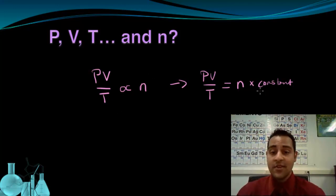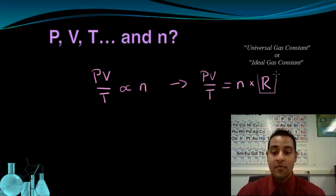This constant gives us the proportionality that we see in this relationship. It turns out that this constant that we multiply n by to make this relationship work is pretty special. So we give it a symbol, and that symbol is R, the universal gas constant or ideal gas constant.